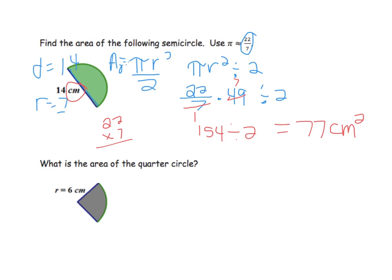Now what's the area of the quarter circle? We're given the radius. Please pause — we're still using 22 sevenths. Pause and see if you can figure out this one on your own.